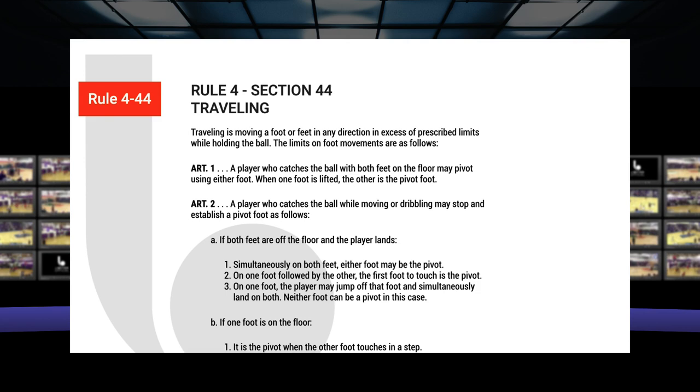Rule number four, definitions, is a high priority for all basketball officials. It's the starting point. It gives you the fundamental building blocks upon which other rules will refer to and be built — a high priority for new officials or officials wanting to become basketball rules experts. Our options on the question are pass the ball, shoot the ball, begin a dribble, or drop the ball to the floor. Let's go to rule four, section 44, and have a look.